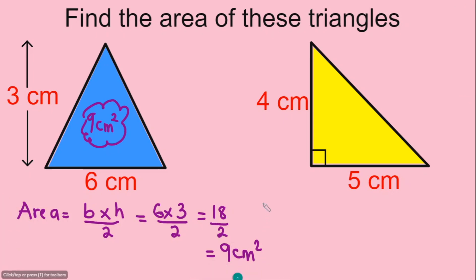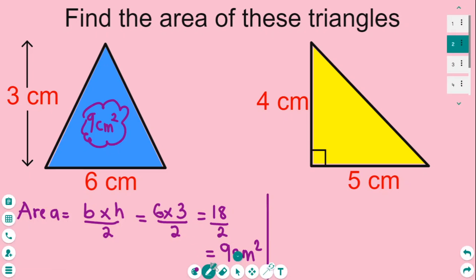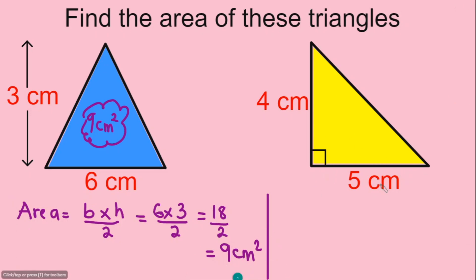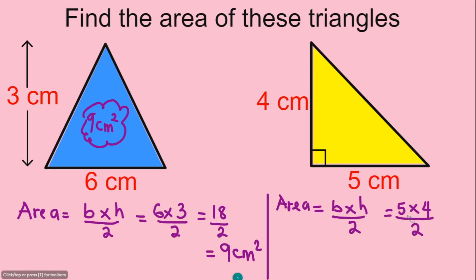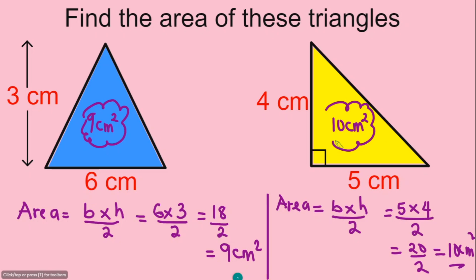Now for the second question — this yellow triangle has a base of 5 centimeters and a height of 4 centimeters. Writing out the formula: area equals base times height divided by 2. The base is 5 centimeters and the height is 4 centimeters, divided by 2. Five times 4 gives you 20, and 20 divided by 2 gives you 10 centimeters squared. The total space inside this yellow triangle is 10 centimeters squared.